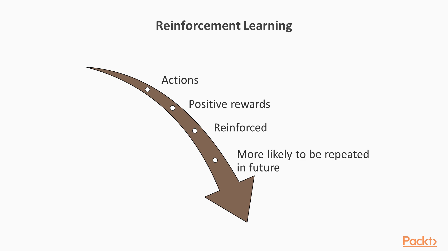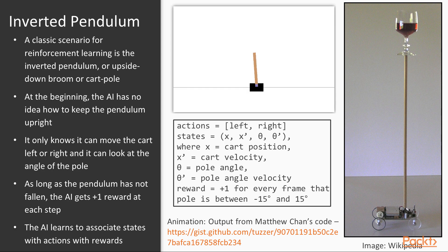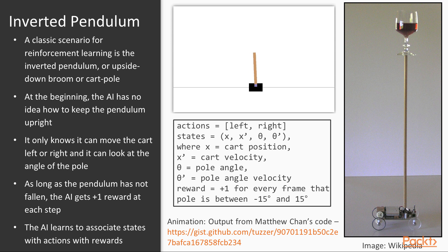Actions with high reward associations will be more likely to be repeated in the future, which is essentially solving the problem. A classic scenario for reinforcement learning is the inverted pendulum, also known as the upside-down broom or cart pole problem. When the AI is initialized, it knows nothing about how to keep the pendulum upright. It only knows it can move the cart left or right, and it can observe the current position and velocity of the pole as well as the position and velocity of the cart.